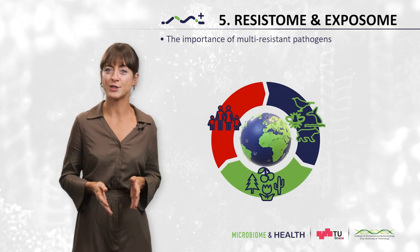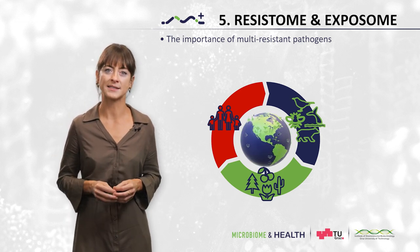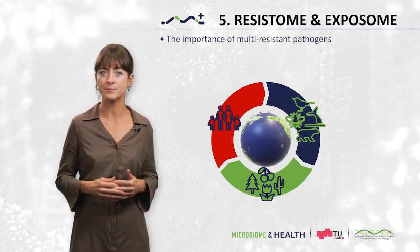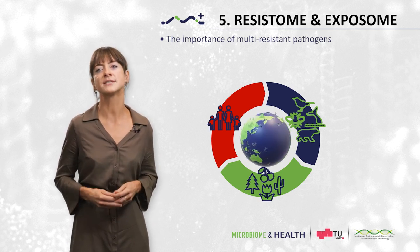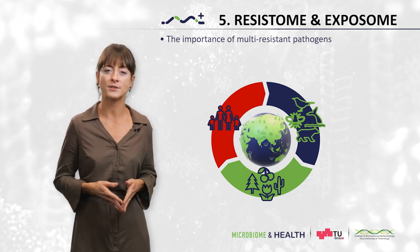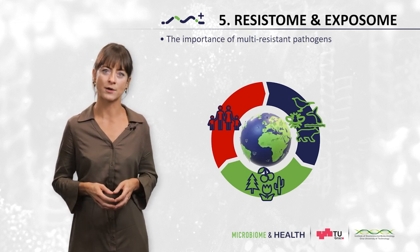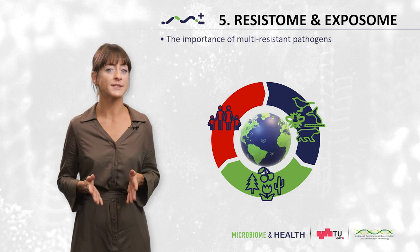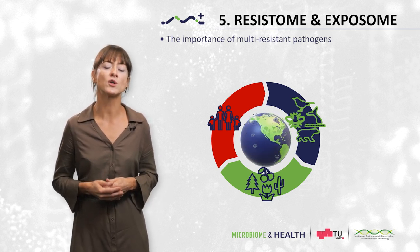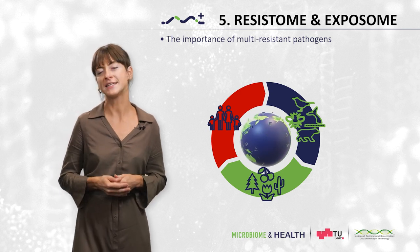To sum this chapter up, antimicrobial resistance is a serious threat for humankind. It will require countermeasures that must include the One Health Principle to sufficiently address this global problem. The built environment, especially medical care institutions as well as agricultural environments, are important sources for resistant microorganisms. However, recent research has pointed out that antimicrobial resistance is also a common feature in natural resistomes, which will be covered in the next lecture.